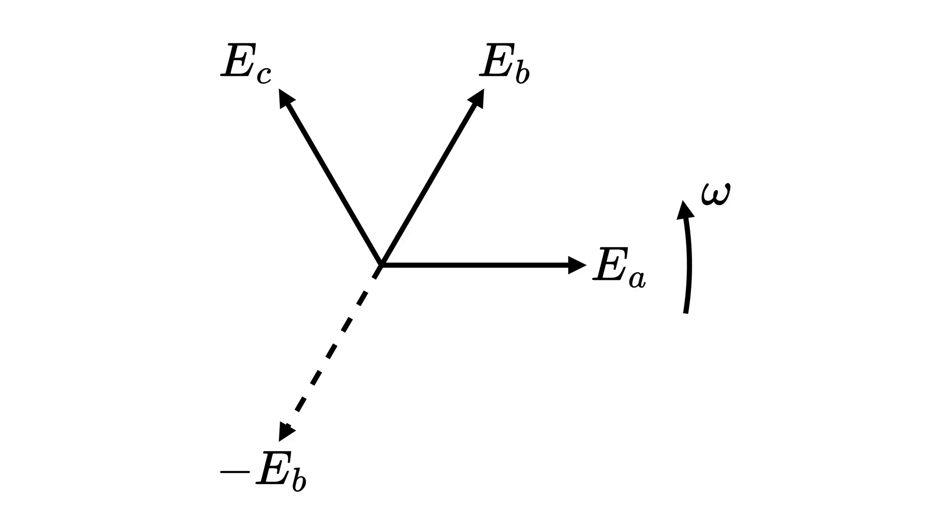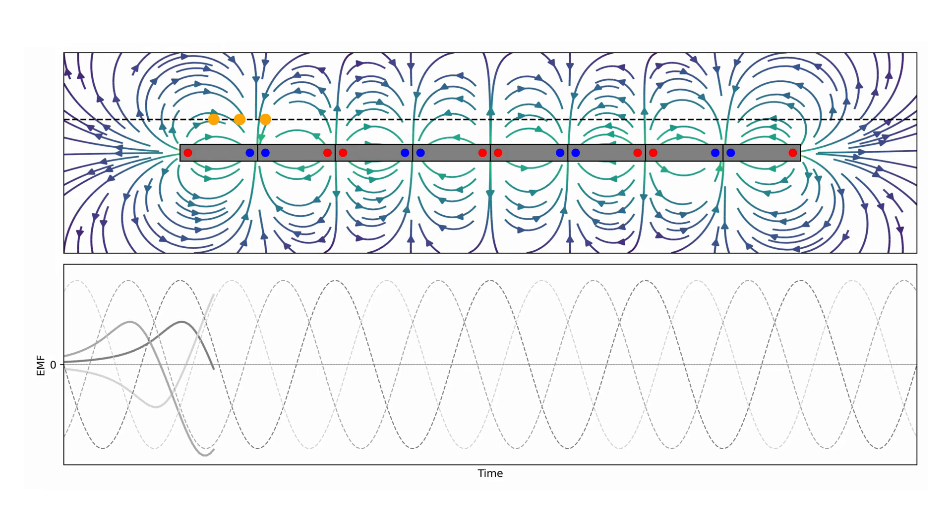Representing them as phasors shows that flipping the middle phasor causes them to be equally spaced apart by 120 degrees, which in practice is achieved by reversing the polarity of the corresponding conductor.